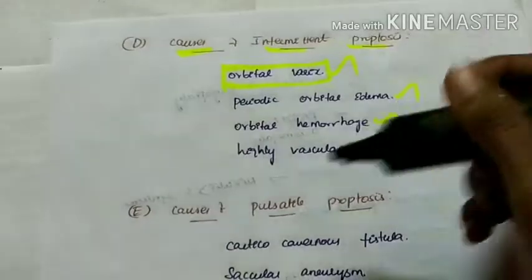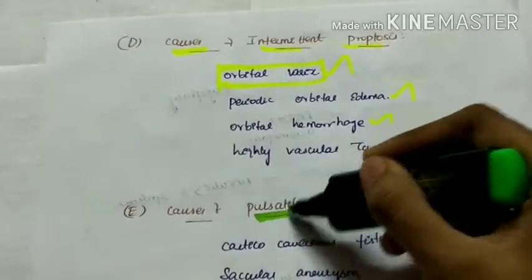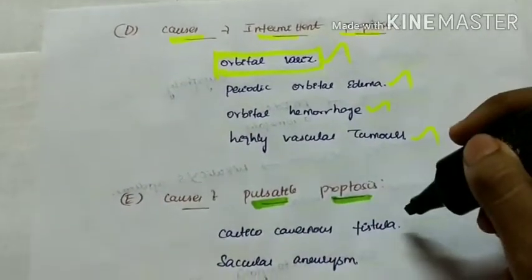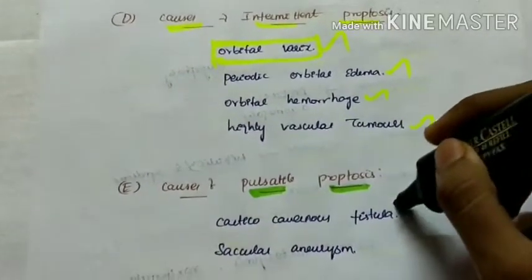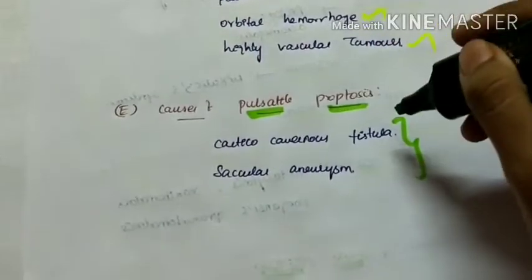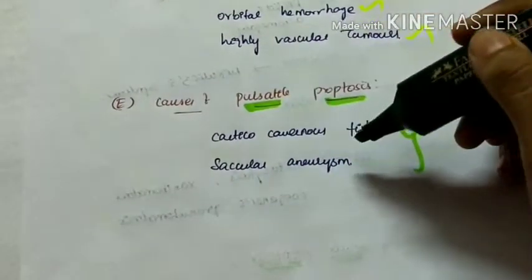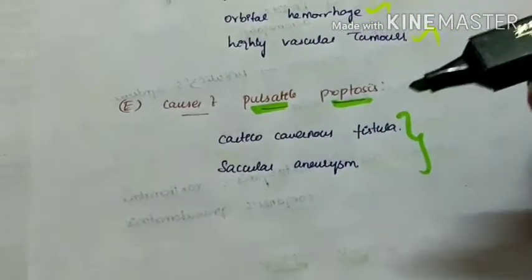Causes of pulsatile proptosis are vascular disorders like carotico-cavernous fistula and saccular aneurysm.